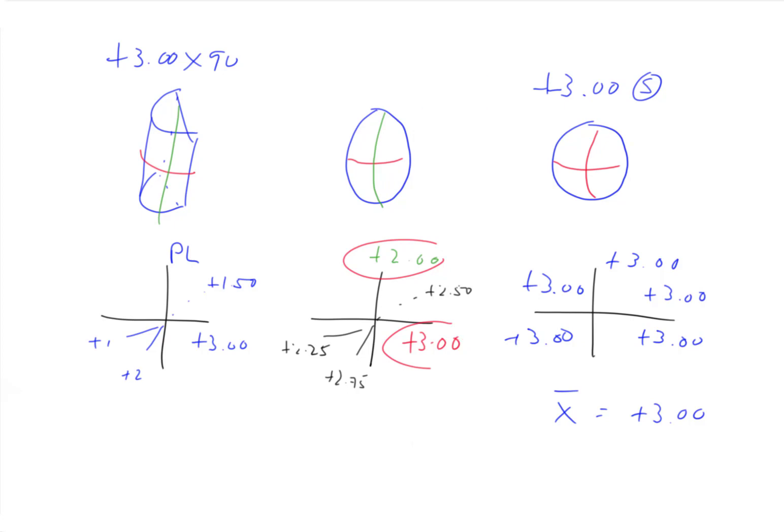And the average power in the lens, if we were to find the power everywhere on the lens, and average it out, it would be plus 2.50, which is also the power halfway between plus two and plus three.